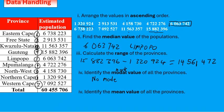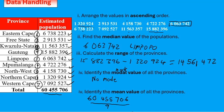Now the last question: calculating the mean value. For the mean we add all populations for the different provinces and divide by the number of provinces. Fortunately the total is already given, so we take the total — sixty million, four hundred and fifty-five thousand, seven hundred and six — and divide by the number of provinces. We have nine provinces.